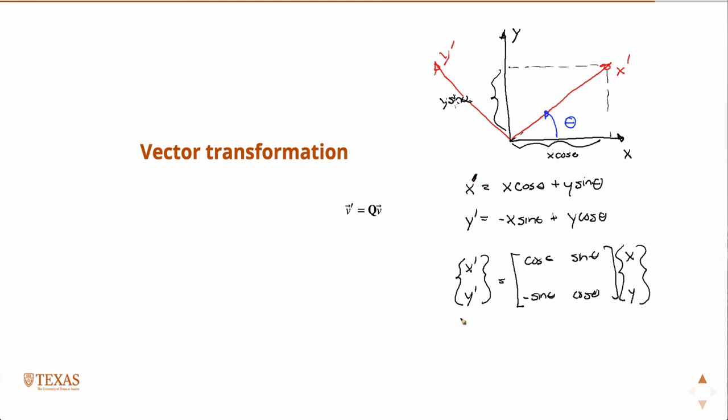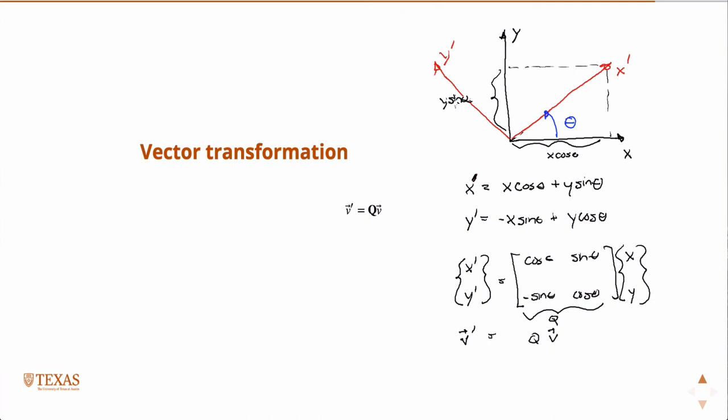And so, then if I call this whole thing, these are just the components, if I call that the vector v prime, and I call this the matrix q, and the vector v, then I have this equation. So, a vector v will transform into a vector v prime through the rotation matrix q. So, there's what q looks like, where theta is the angle between v prime and v.